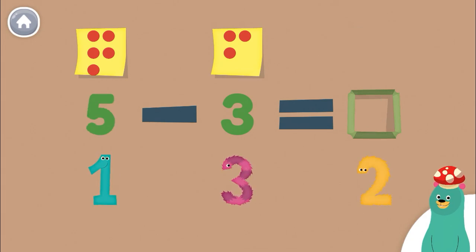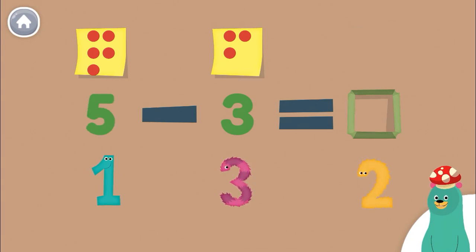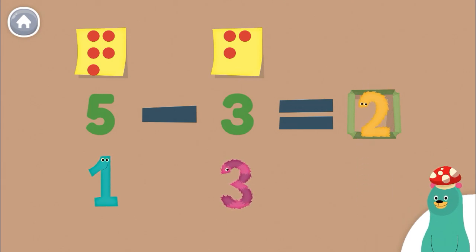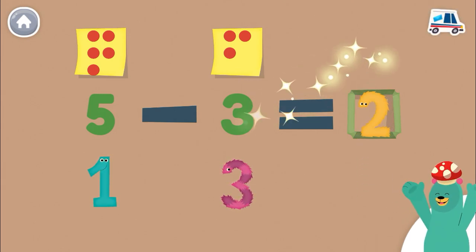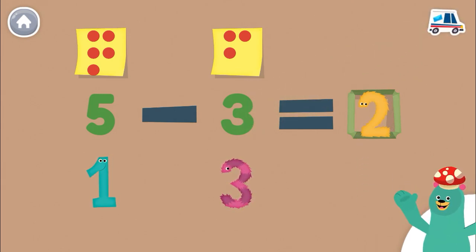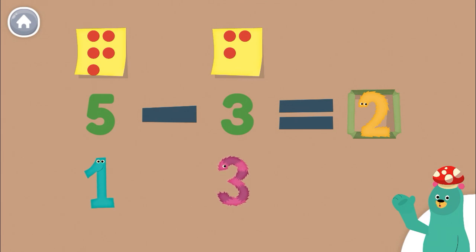What do you get when you take 3 away from 5? 2. Yay! 5 minus 3 is 2.